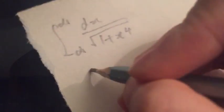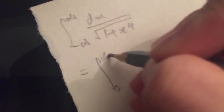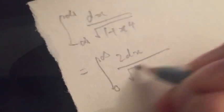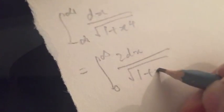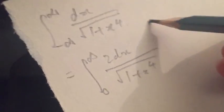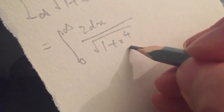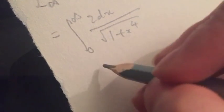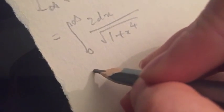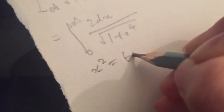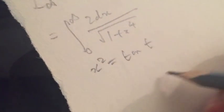The first thing I'm going to do is rewrite this, because I don't like the minus infinity, so I'm going to write this as 2 times the integral of dx over 1 plus x to the 4, because it's an even function. It's 1 plus x to the 4, and I want to turn it into 1 plus x squared where x squared equals tan θ.